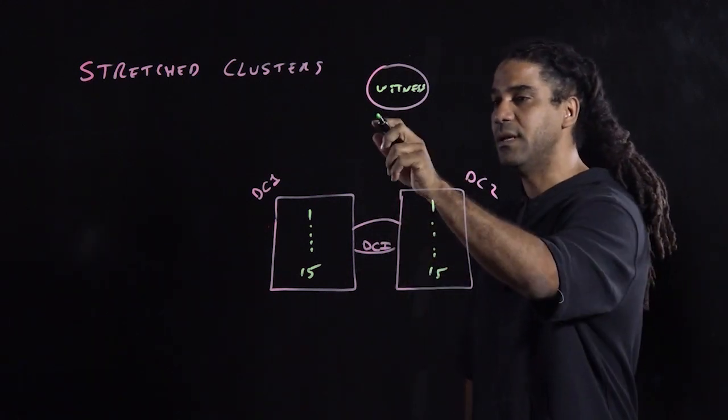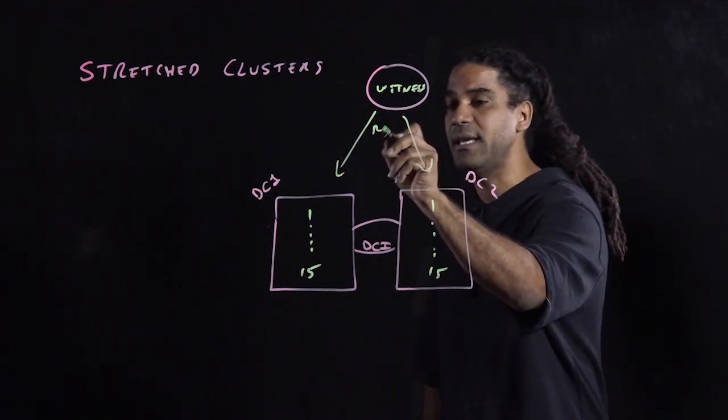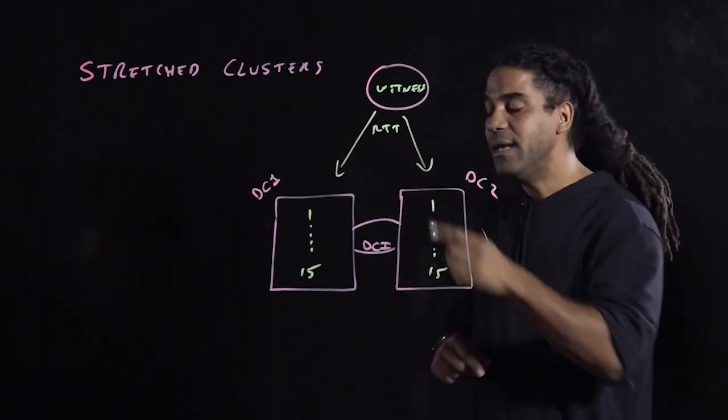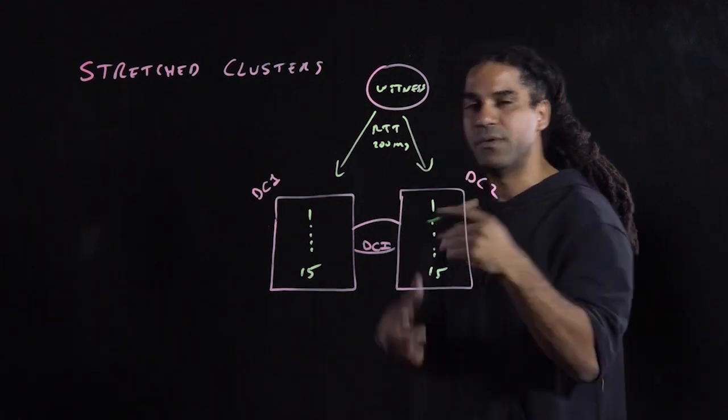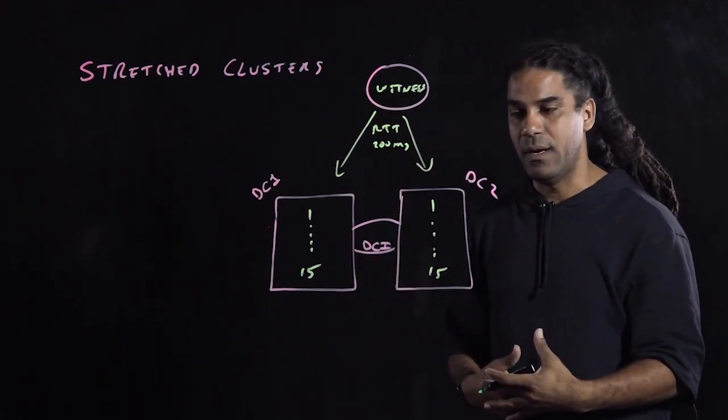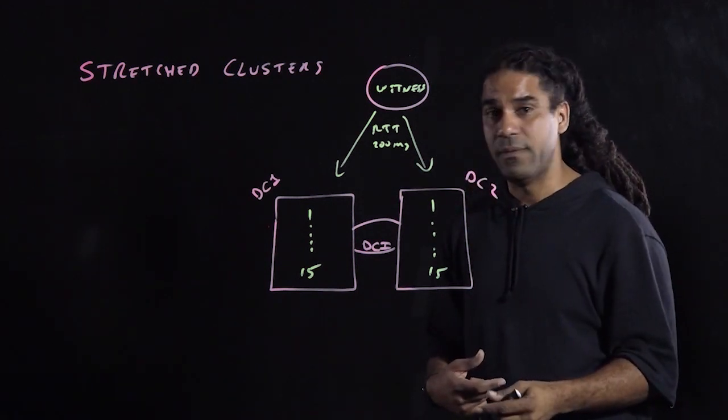One condition, another condition, is that the distance between these two guys, the round trip delay, RTT, round trip time, it should not be more than 200 milliseconds. Of course, you want it closer to that for better performance because the witness would constantly be updated with information.